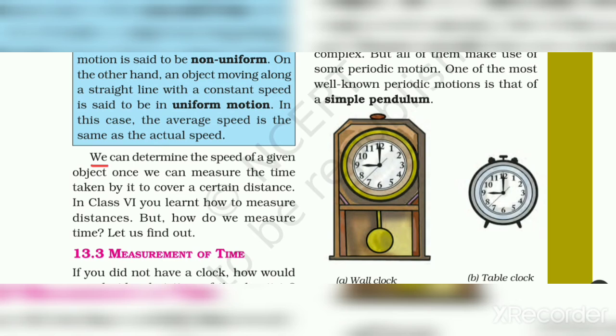We can determine the speed of a given object once we can measure the time taken by it to cover a certain distance. Toh yaha pe jo bhi objects diya gaya hai, unke certain distance ko cover karne ke liye jo time leta hai, unko measure karna hai aur unke speed ko determine karna hai.